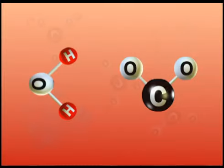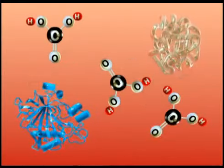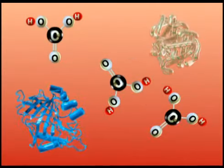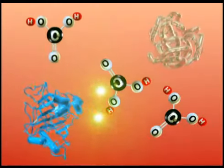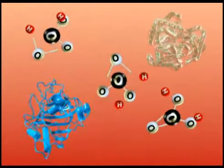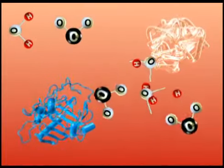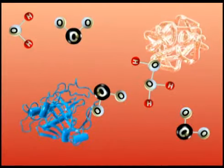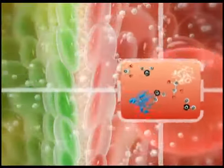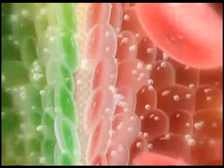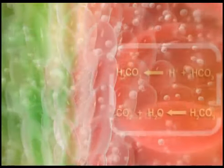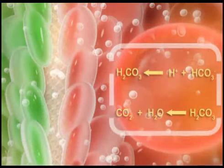These reactions occur in the red cell, helped by the enzyme carbonic anhydrase and also by the oxygenation of hemoglobin. The carbon dioxide so formed now enters the plasma and is able to diffuse out into the alveoli.